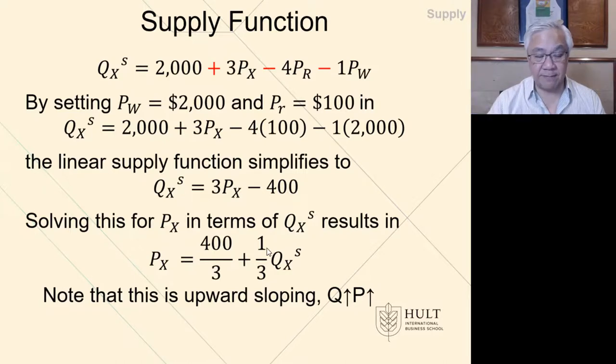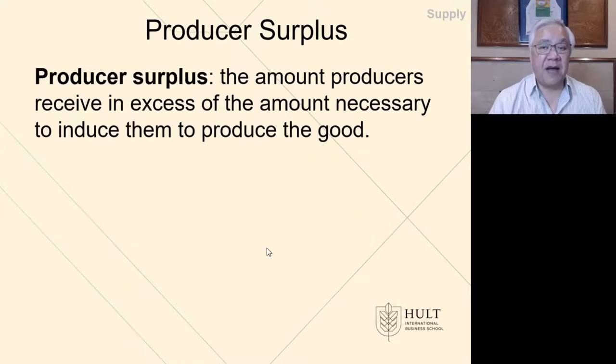Producer surplus is defined as the amount that producers receive in excess of the amounts necessary to induce them to produce the goods. That sounds like a mouthful. What does that mean? It means there was a certain amount that the producers would have taken, and if we pay them more than that, that's their surplus—the producer surplus.